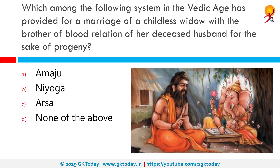Which among the following systems in the Vedic age provided for a marriage of a childless widow with the brother or blood relation of a deceased husband for the sake of progeny? The correct answer is Niyog. An example of this practice can be found in the epic Mahabharata, where Veda Vyasa blesses the Kuru dynasty with heirs after the death of King Vichitravirya.